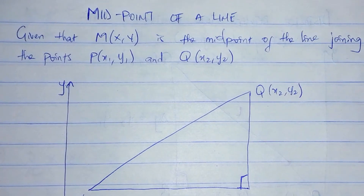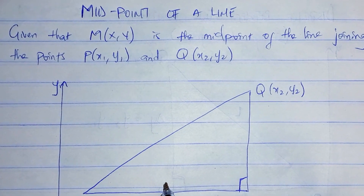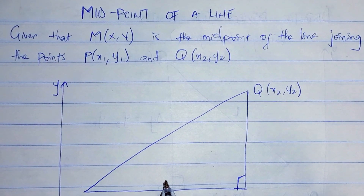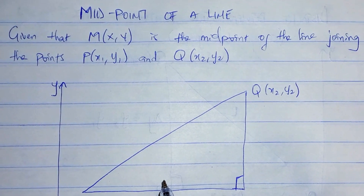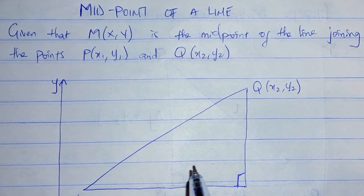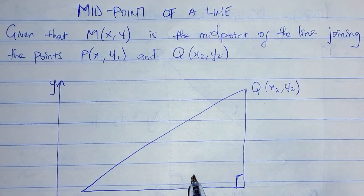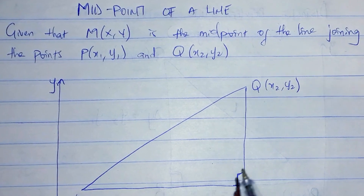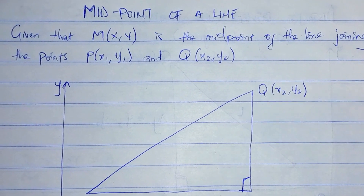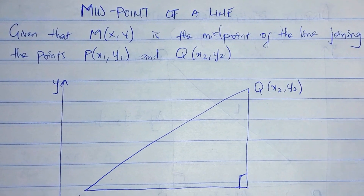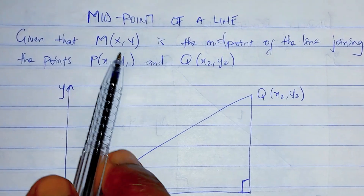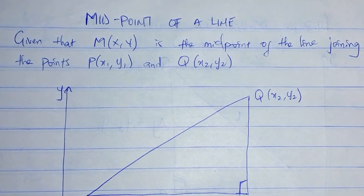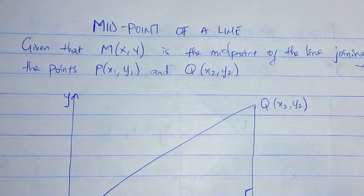Given that M(x, y) — that's point M — is the midpoint of the line joining P, which is (x1, y1), and Q, which is (x2, y2). How do we get our formula for x and for y respectively as the midpoint of a line?